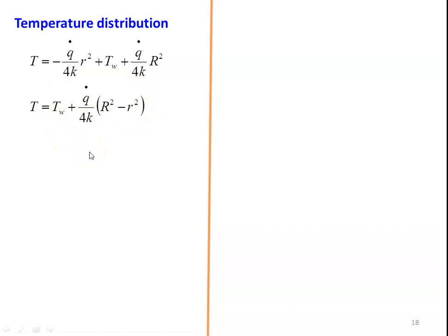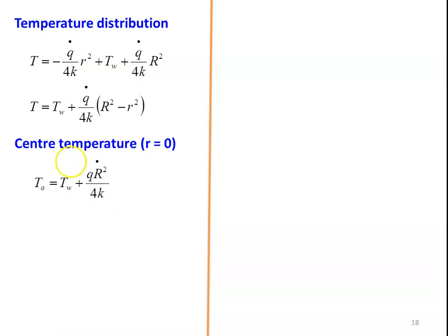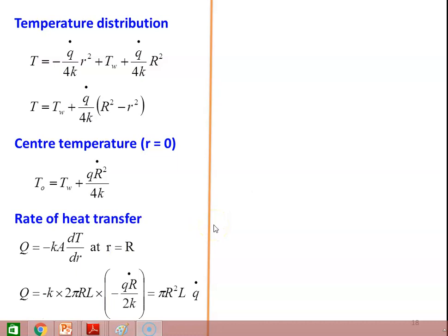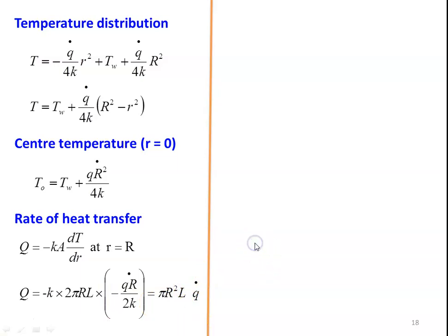Using this equation, we can determine the temperature at any radius of the cylinder from the center (r = 0) to the outer surface (r = R). The center temperature is T_O = T_W + Q̇R²/(4K). The rate of heat transfer Q = −KA·(dT/dR) at r = R, which simplifies to Q = π·R²·L·Q̇, where π·R²·L is the volume of the cylinder and Q̇ is the heat generation per unit volume.